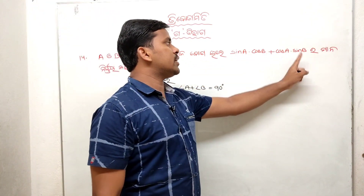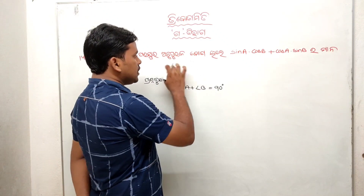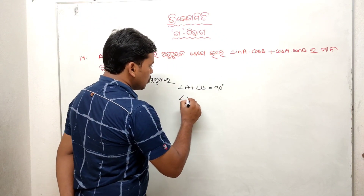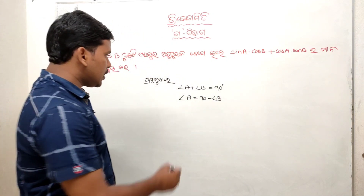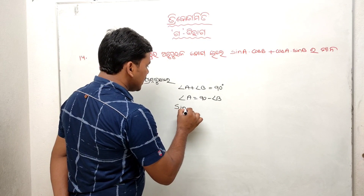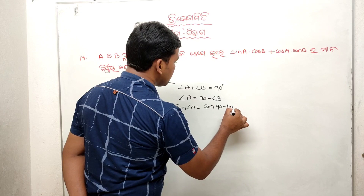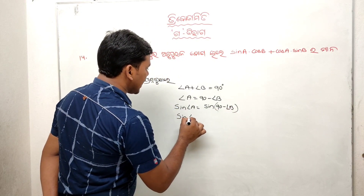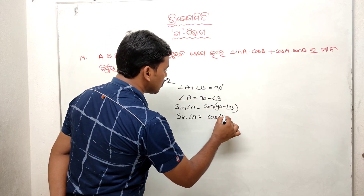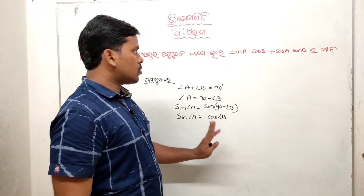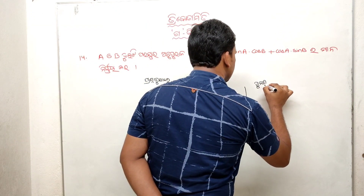We write sin A into cos B plus cos A into sin B. Since angle A plus angle B equals 90 degrees, angle A equals 90 minus angle B. So sin A equals sin(90 minus angle B). Using the formula sin(90 minus theta) equals cos theta, sin A equals cos B.